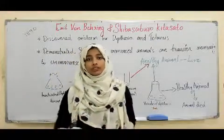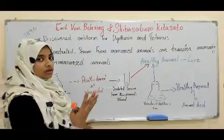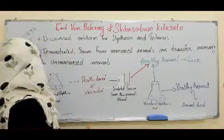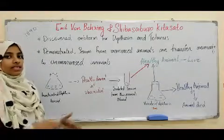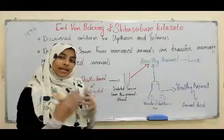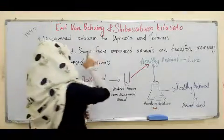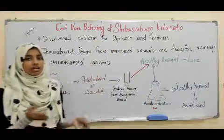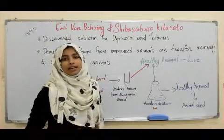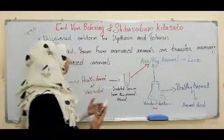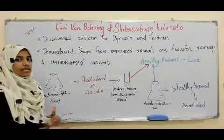Now we move to the discoveries of Emil von Behring and Shibasaburo Kitasato. In 1890, they discovered the antitoxins for diphtheria and tetanus. They demonstrated that serum — the pale yellow fluid present in blood — has the ability to transfer immunity from an immunized animal to another unimmunized animal. First, they inactivated some diphtheria toxoid and injected it into animal one, a guinea pig.